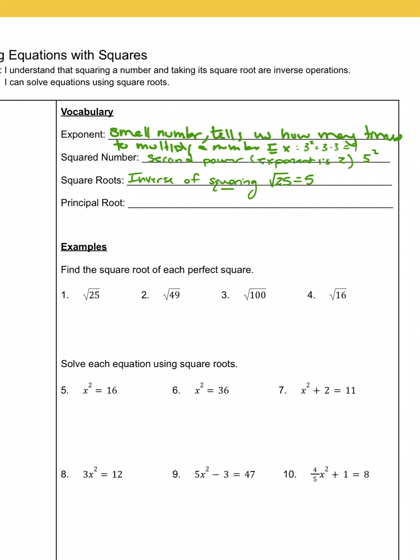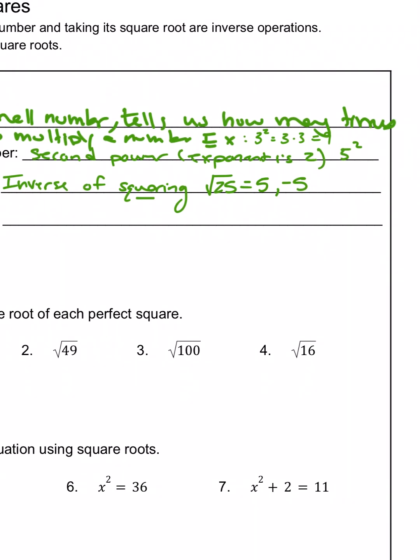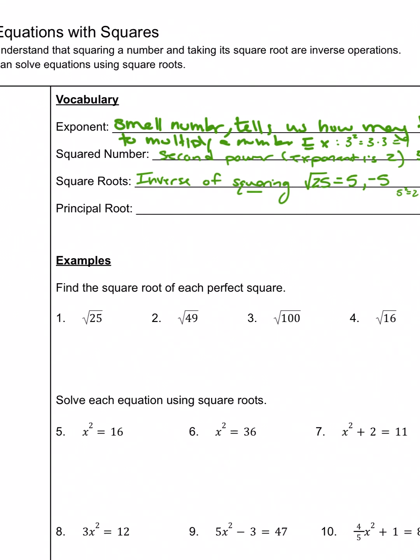Technically, every square root has two answers, the positive and the negative. That is because 5 squared equals 25, but negative 5 squared, that's negative 5 times negative 5, is also a positive 25. So technically, every square root has two answers, a positive and a negative. If it asks for the principal root, then it's specifically asking just for the positive root.